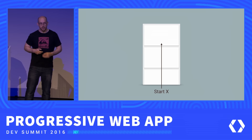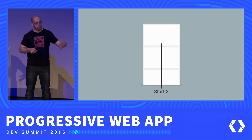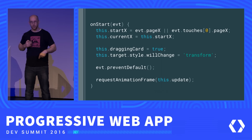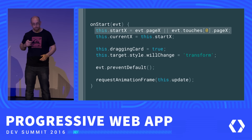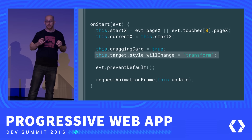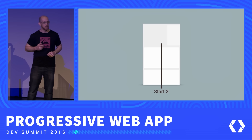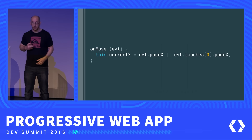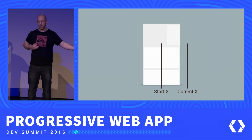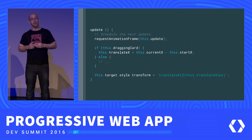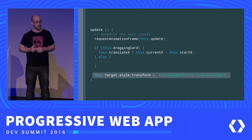Back to our event listeners — we have our card at its start X position. When you tap on it, onStart records the position — either pageX or the first touch event's pageX. Then we add will-change dynamically, which will cause a brief hit as we create the layer, but it's probably going to be OK. When you move your finger, onMove tracks the new pageX. Since we know where we were and where we are, we can figure out the translation. In the update function, if you're dragging the card, the translation is current minus start, and we apply a transform with that value.